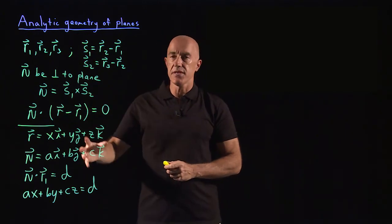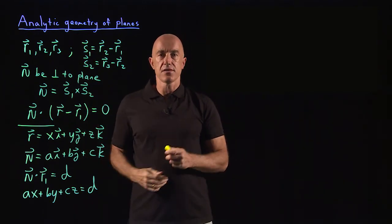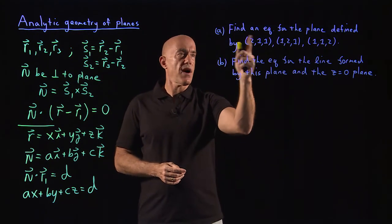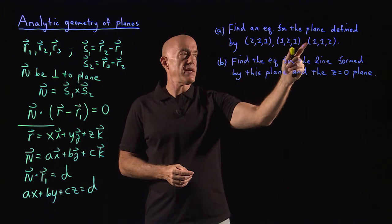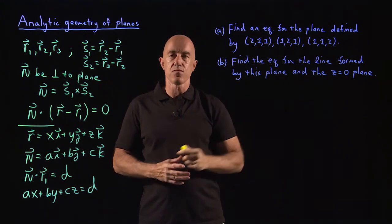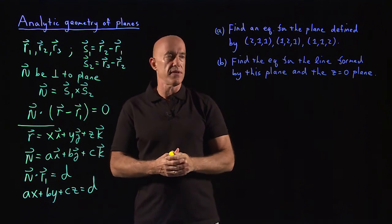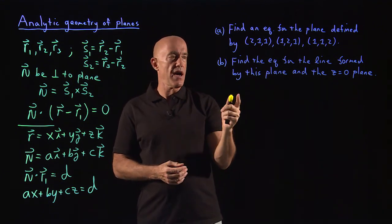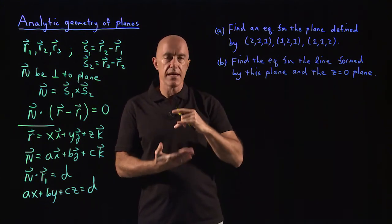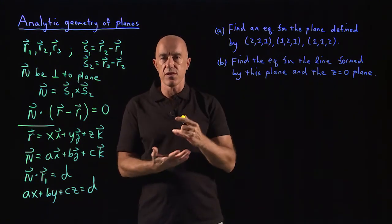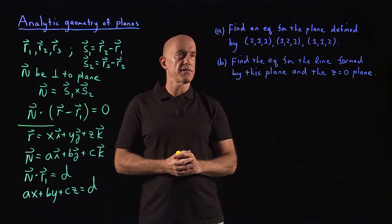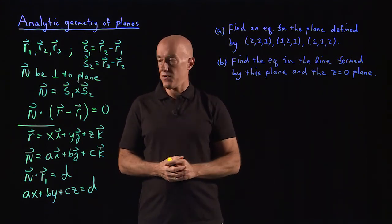To make all of this concrete, let's look at an example. I want to find an equation for the plane defined by the points (2,1,1), (1,2,1), and (1,1,2). Then we're going to find the equation for the line formed by this plane and the z equals zero plane. When two planes intersect, you get a line. So let's solve part a first.